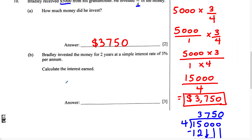For Part B, it says Bradley invested the money for two years at a simple interest rate of 5% per annum. Calculate the interest earned. The two words 'simple interest' tell you everything you need to know. Once you see simple interest, we're just going to use the formula.